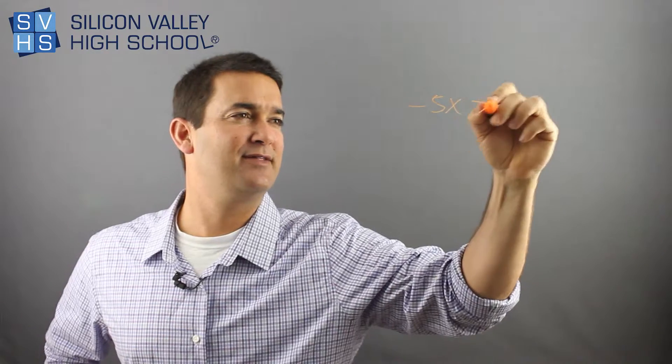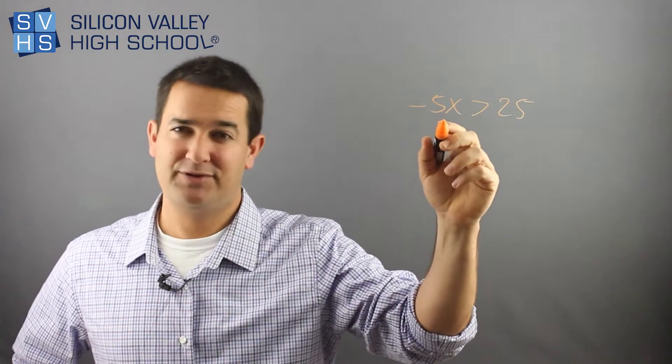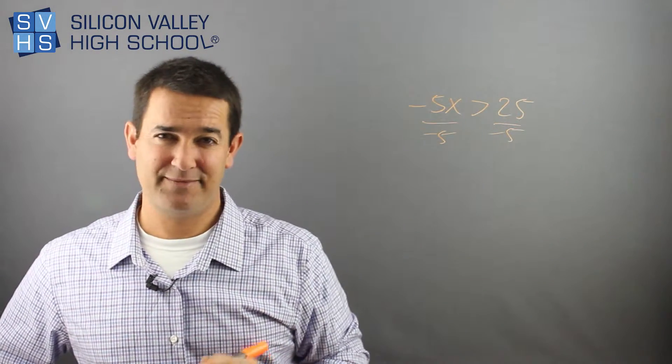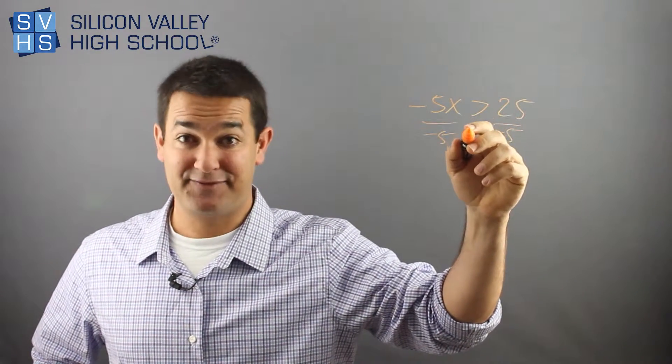So if you have, again, negative 5x is greater than 25, now obviously to get x alone, you're going to divide both sides by negative 5. Anytime you divide by a negative number, anytime you divide by a negative number, this sign flips, right?